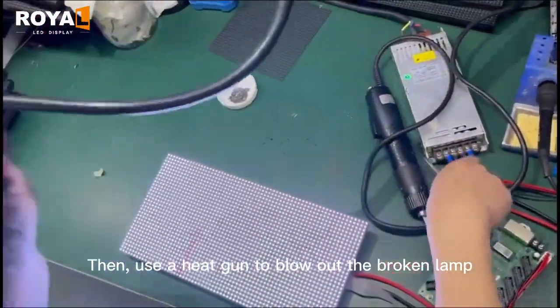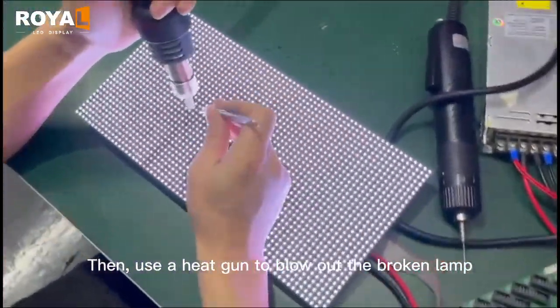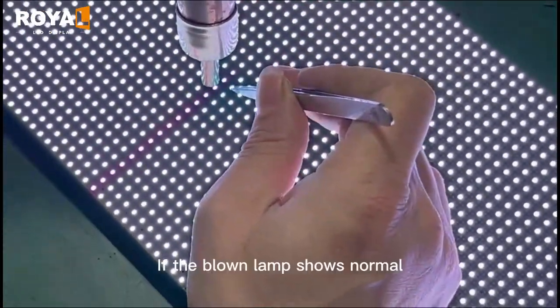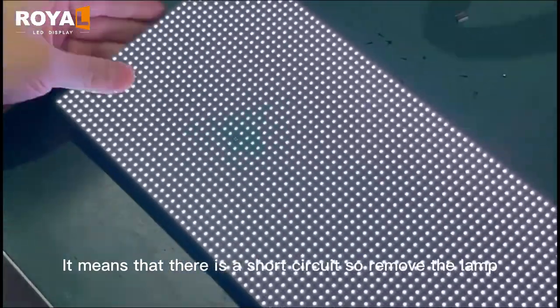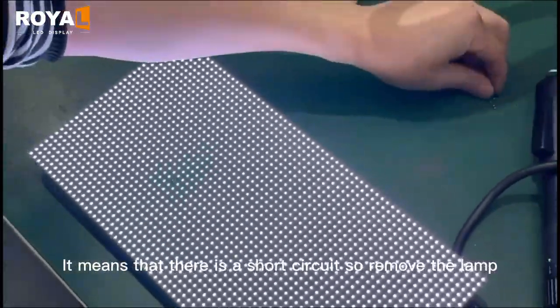Then use a heat gun to blow out the broken lamp. If the blowing lamp shows normal, it means there is a short circuit, so remove the lamp.